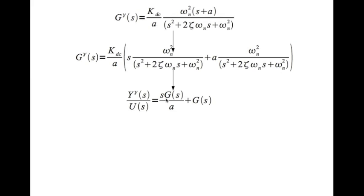Of course you need to bring the K_DC inside. So if you do that, this looks like s times G of s divided by a, and K_DC times omega_n squared divided by s squared plus 2 zeta omega_n s plus omega_n squared is G of s. So you can write the response as s U of s G of s divided by a plus U of s G of s. Now U of s G of s - s times U of s G of s is s times Y of s because U of s times G of s is Y of s.